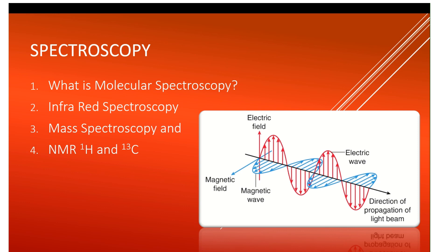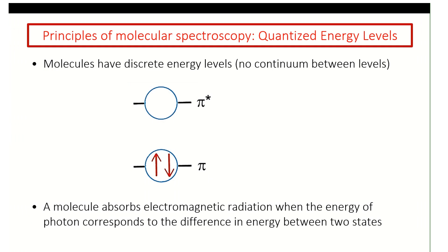The two nuclei we're concerned about are protons and carbon-13s. For example, we have a molecule with a pi-pi star system, and there's an energy difference: ΔE = hν, where h is Planck's constant and ν is the frequency of light.